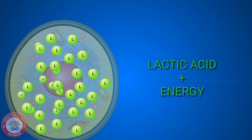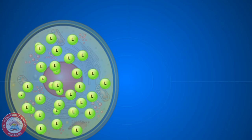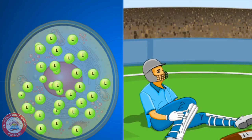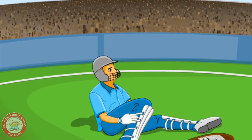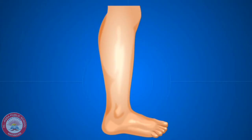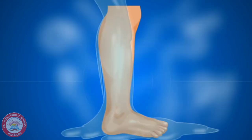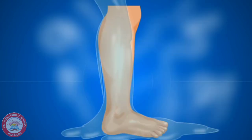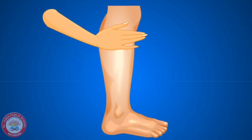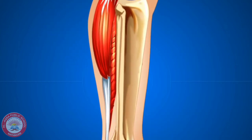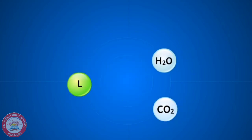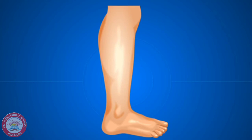Lactic acid is toxic to our body and the accumulation of this lactic acid causes muscle cramps. Now what can we do to relieve these muscle cramps? We can have a hot water bath or a massage in the affected area. This will help in increasing the blood circulation in that area. More blood means more oxygen, and in the presence of oxygen the lactic acid will be broken down into carbon dioxide and water, and the cramp will be relieved.